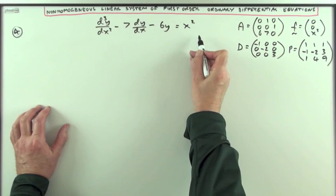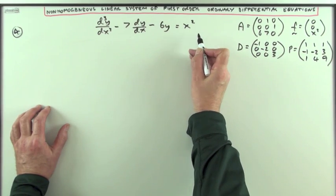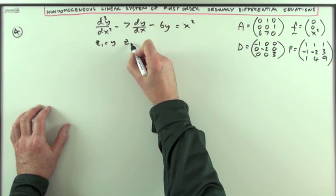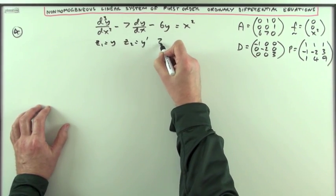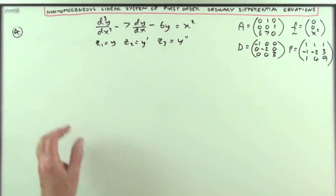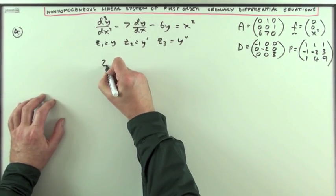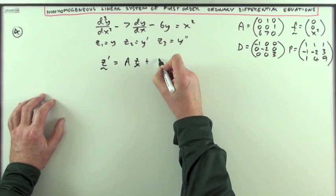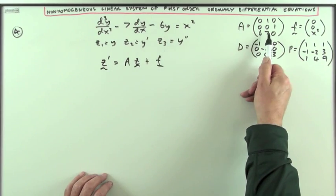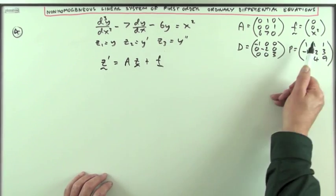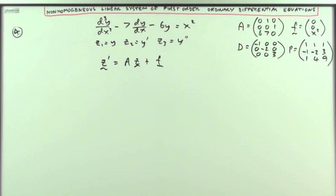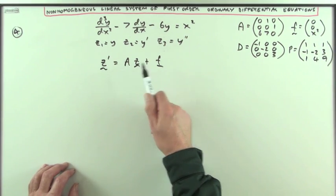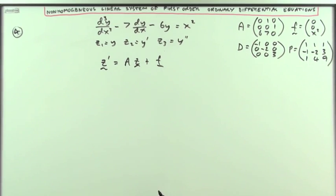So far we've taken this third order linear differential equation and by using the substitutions z1 equals y, z2 equal to y dashed, and z3 equal to y double dashed, we formed the system z dashed equals Az plus f, where A was this matrix of coefficients and f was where these extra additional functions added at the end. We've taken the matrix A and diagonalized it, there's the diagonal matrix, there's the matrix of eigenvectors.